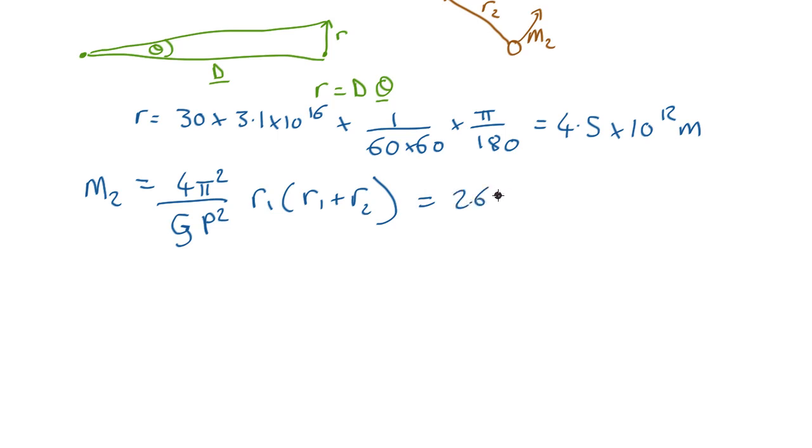Now we don't know r2, we know everything else in there, so if you substitute numbers in that comes out as 2.6 by 10 to the 7 times (4.5 by 10 to the 12 plus r2) squared, so there should be a squared up there. So that's one equation.